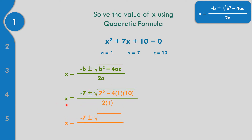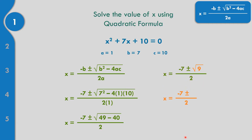Let us solve. Negative 7, plus or minus: 7 times 7 is 49. Negative 4 times 1 is negative 4. Negative 4 times 10 equals negative 40, all over 2. So 49 minus 40 equals 9. Then X equals negative 7 plus or minus the square root of 9, which equals 3, all over 2.